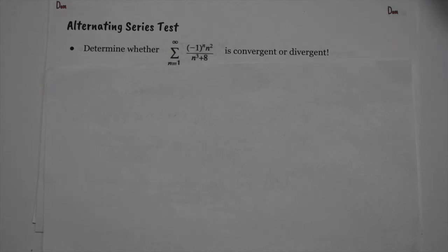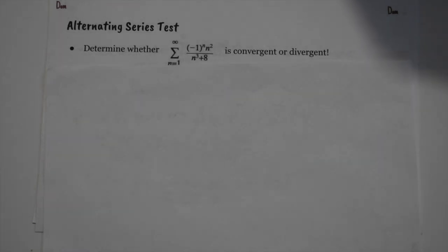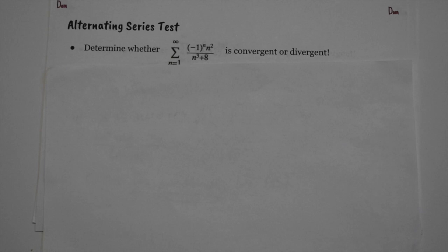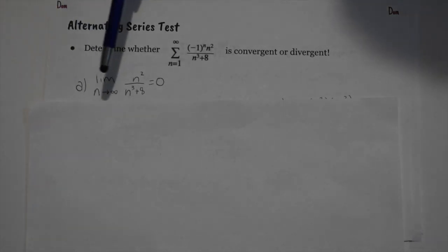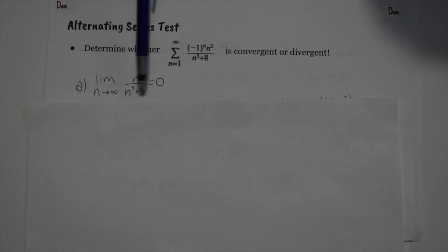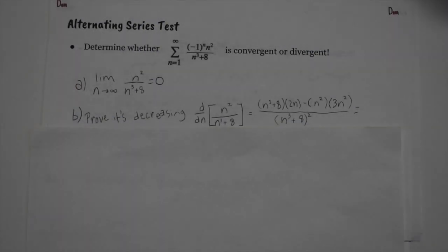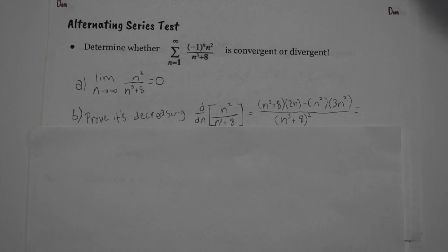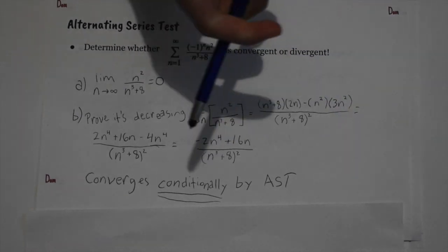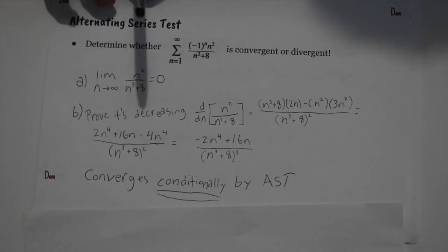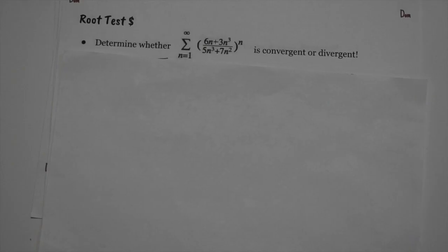The alternating series test is tricky because it only proves conditional convergence, not absolute convergence. It's best used after showing the absolute value of the series diverges. Two conditions must be met: the limit as n goes to infinity of the terms must equal zero — and it does here — and the terms must be decreasing. We take the derivative of the absolute value of the terms, find it's negative, so it's decreasing. It converges conditionally by AST.